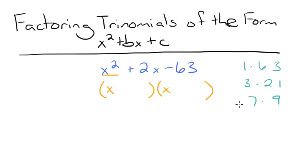will add to 2. So the two factors must be 7 and 9, and the 7 needs to be negative, because negative 7 plus 9 is equal to 2. So we're going to write minus 7 in one set of parentheses and plus 9 in the other.